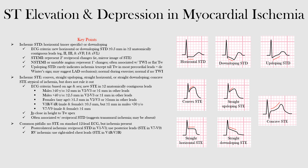Looking at the diagram, the ST segment is depressed below baseline — the PR segment serves as our baseline. With horizontal ST depression, the segment is flat. The next example shows downsloping ST depression. The horizontal type is more specific for ischemia, but both represent ischemic ST depression.